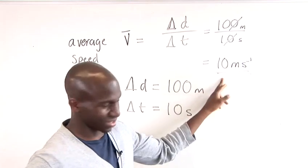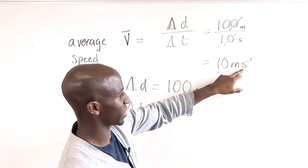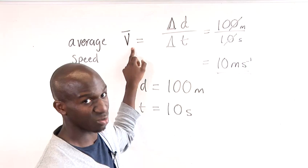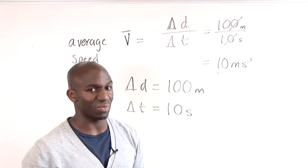And that's ten meters per second which is your average speed run during that hundred meters. And that's basically how to calculate the average speed.